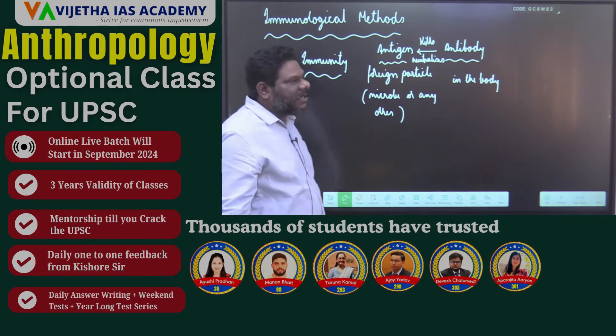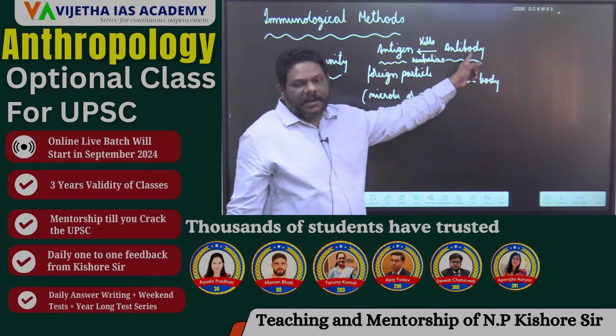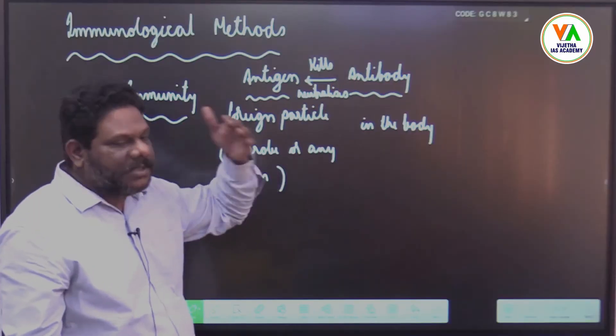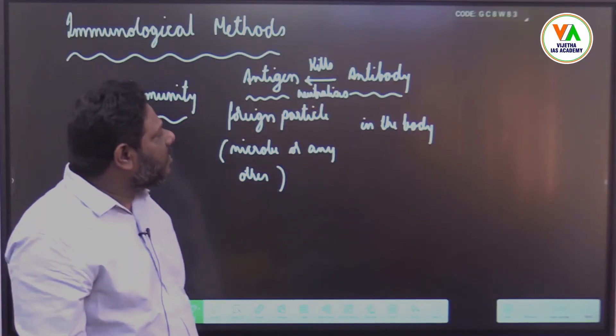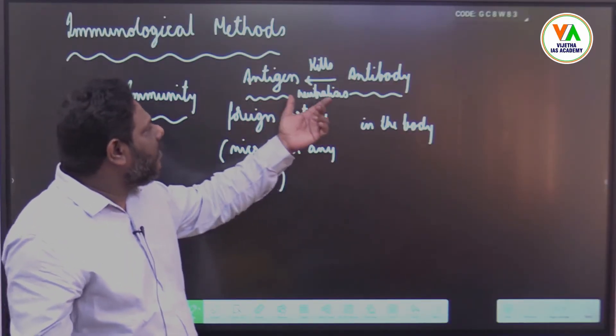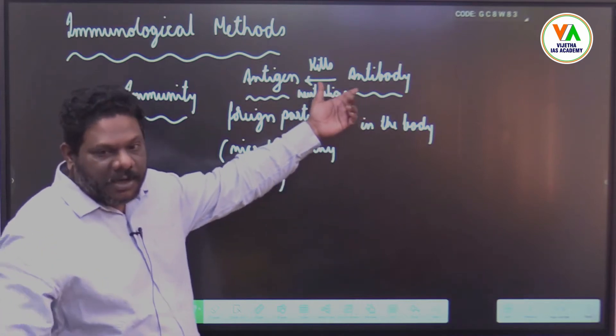That means if there is an antigen in the body, definitely an antibody is produced. The body takes some time. Once the antibody is already formed, it will produce very quickly, but for the first time, it will take some time for the body to produce the antibody.